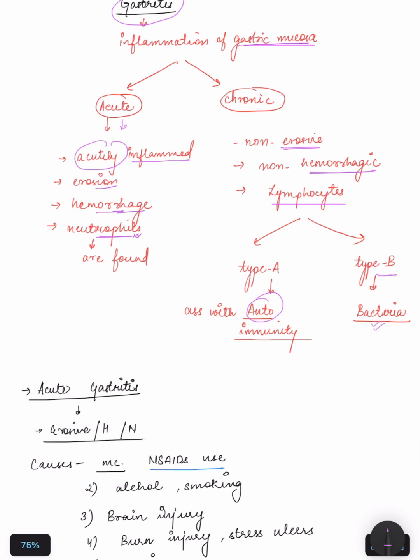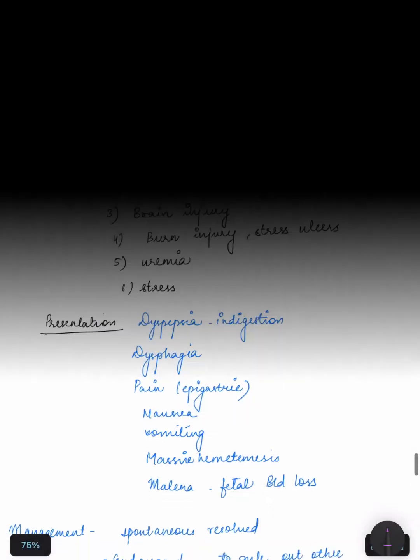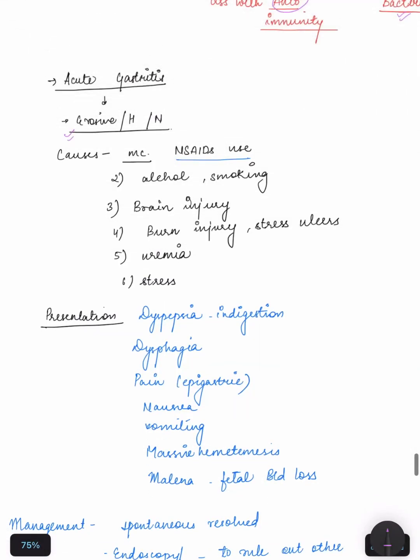Now we are going to study acute gastritis. We already studied erosion, hemorrhage, and neutrophils are present. The causes can be: most common is NSAIDs use, second alcohol, smoking, brain injury or burn injury, uremia, and stress ulcers.